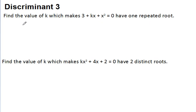Of course, if a quadratic equation has one repeated root, it means that the discriminant, b squared minus 4ac, is equal to 0.